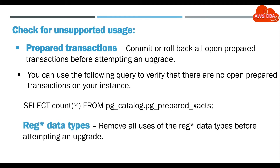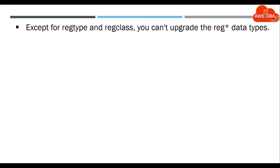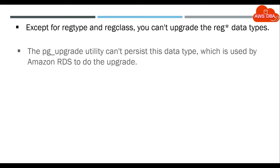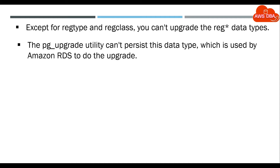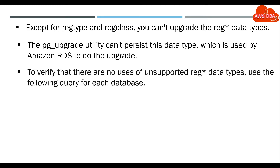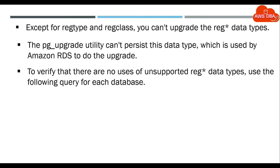Reg data types — remove all uses of the reg data types before attempting an upgrade, except for reg_type and reg_class, which you can upgrade. The pg_upgrade utility can't persist this data type, which is used by Amazon RDS to do the upgrade. To verify that there are no uses of unsupported reg data types, use the following query for each database.